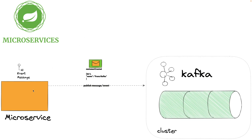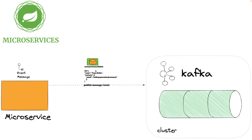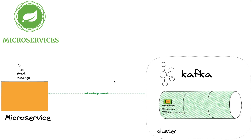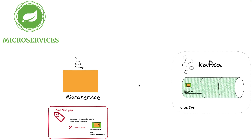Now let's look at the second use case. Suppose our customer microservice publishes an event 'customer created' with id 1, and then for the same customer publishes another event 'customer contact added' — someone just added an email for this customer. The second message is sent to Kafka and acknowledged. But if we look closely, we received 'customer contact added' before 'customer created' — because the first message timed out due to a network issue.